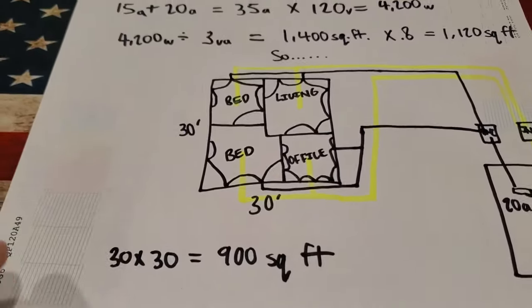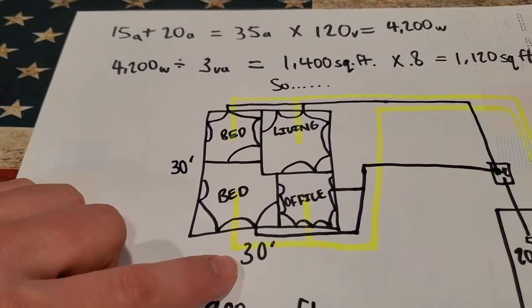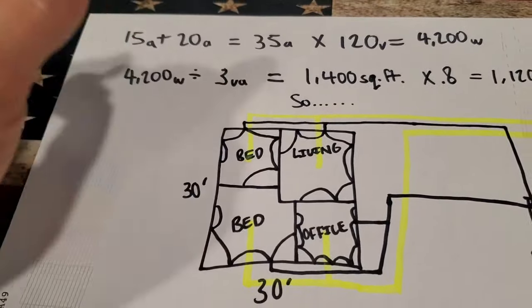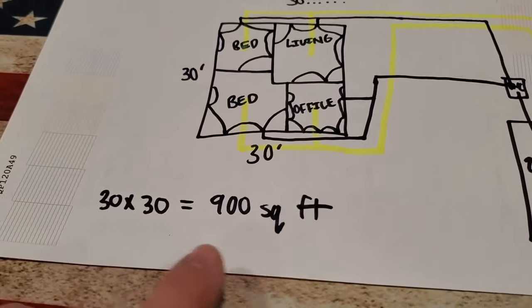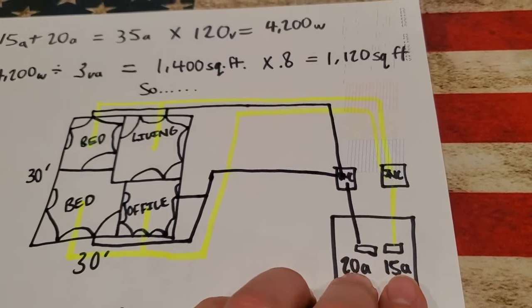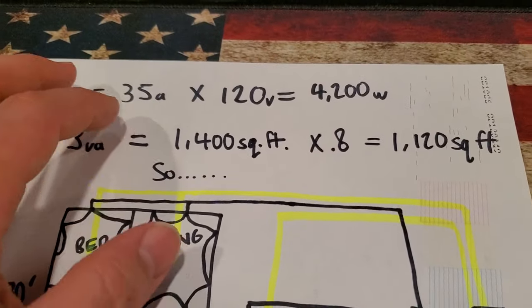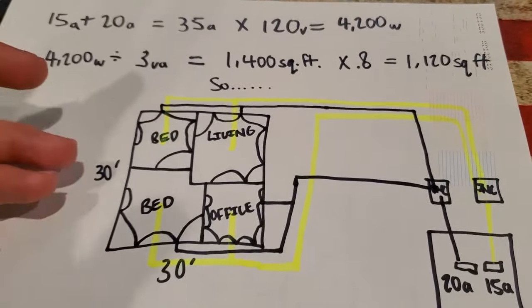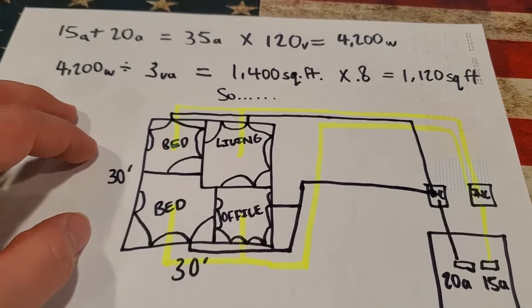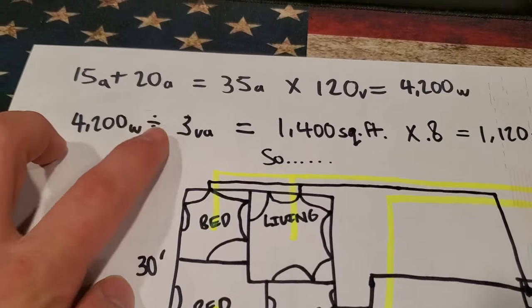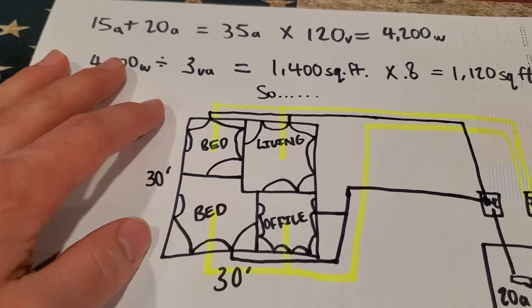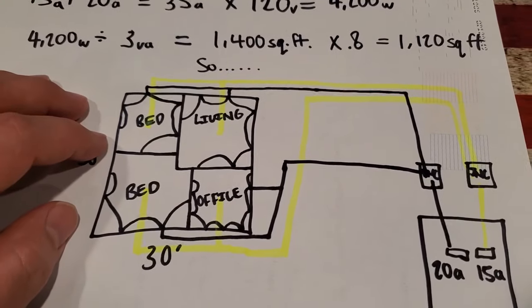Now we're going to assume that we're putting on a 30 foot by 30 foot addition with those rooms that we talked about, the living room, two bedrooms and an office. So that comes out to be only 900 square feet. So you can see with just those two breakers, a 20 amp and a 15 amp, we have plenty of power for covering this area because our lighting and our receptacle circuits are included in that 3VA figure that we've been talking about, or that 3 watts per square foot.